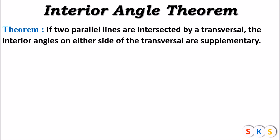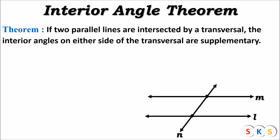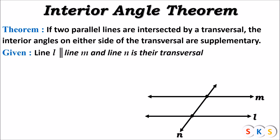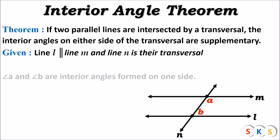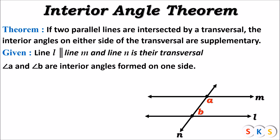Now we will draw a figure. In this figure, line L and line M are parallel, and line N is a transversal of those two parallel lines. So what is given: line L is parallel to line M, and line N is their transversal. We take interior angles — in this figure you can see angle A and angle B. Angle A and angle B is one pair of interior angles.